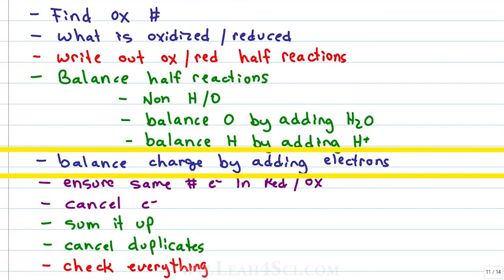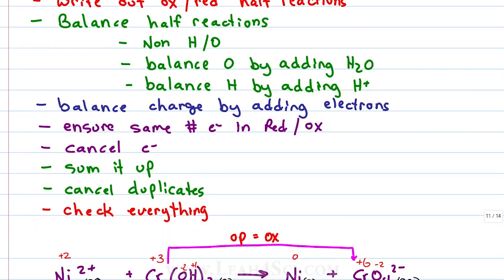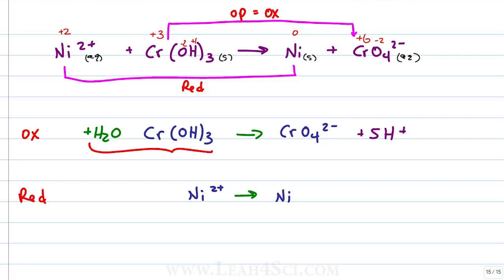Next, we balance charge by adding electrons, so let's take the net charge. For oxidation, we have 0 for the reactants and -2 +5 equals +3 for the products.